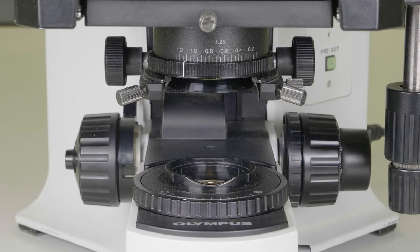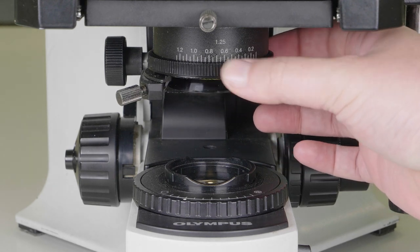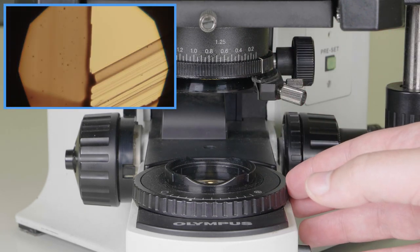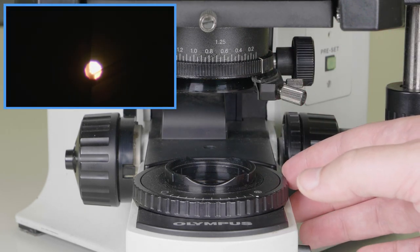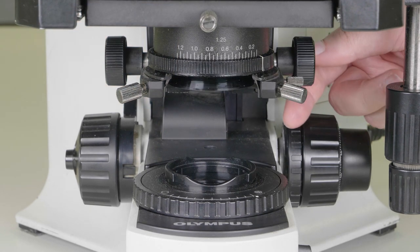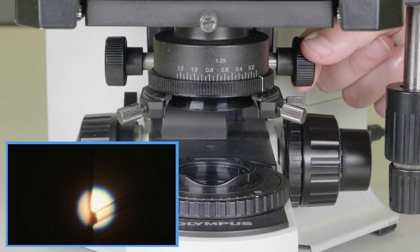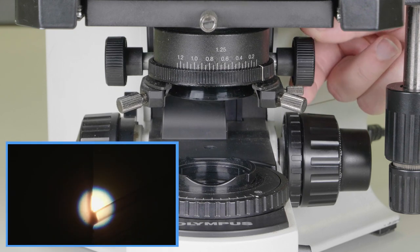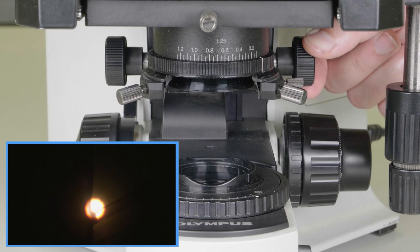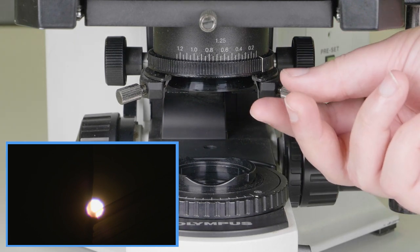Next, we are going to close the aperture iris and the field iris. In the box at the top left, note what happens when the field iris is closed. We get a dot of light. This dot of light helps us to set the correct height of the condenser. Adjust the condenser height until the dot of light is at its smallest and you can see a sharp black border to your dot of light.